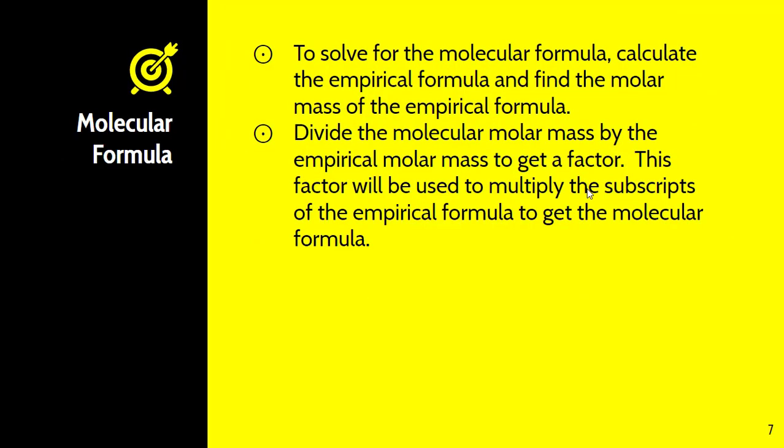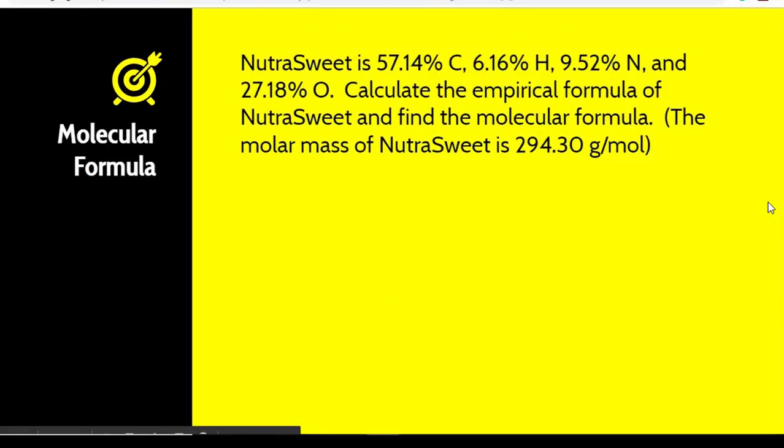The next step is to solve for the molecular formula. To do so, we first calculate the empirical formula, then find the molar mass of the empirical formula. Next, take the molecular molar mass and divide by the empirical molar mass to get a whole number factor. Then multiply all of the subscripts of the empirical formula by that factor to get the molecular formula. It's really only one more step.